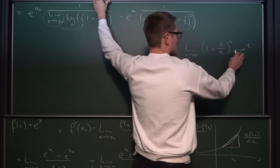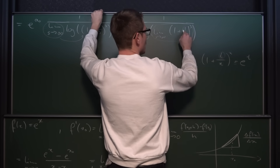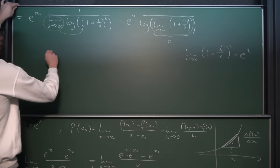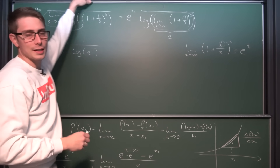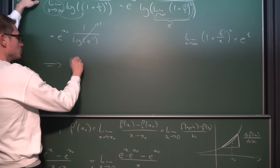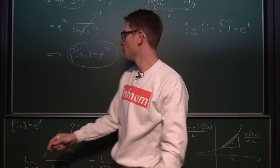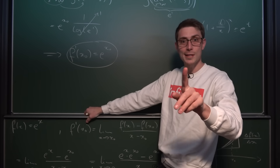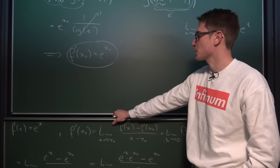In our case t equals 1, so the limit as s approaches infinity of (1 + 1/s)^s equals e to the first power. This leaves us with e^(x0) times 1 divided by ln(e^1). The natural log of e is just 1, and 1 divided by 1 is 1. So the big conclusion is that f'(x0) equals e^(x0) — the derivative of the exponential function is itself.